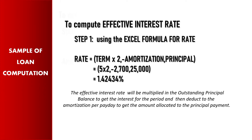Now let's compute the effective interest rate per payday. Using the Excel formula for RATE, we have: RATE = (term × 2, negative amortization, principal). So we have: (5 × 2, negative 2,700, 25,000). Our effective interest rate per payday for the short-term loan is 1.4244%. This effective interest rate is multiplied by the outstanding principal balance to get the interest for the period, then deducted from the amortization per payday to get the amount allocated to the principal payment.